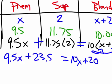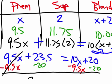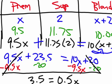Now it's just algebra. Subtract 9.5x from both sides, and subtract 20 from both sides to isolate the variable. After doing that, we're left with 3.5 = 0.5x.